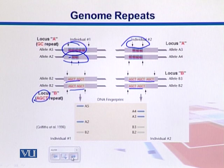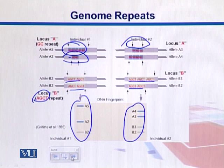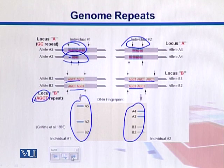These are the bands coming from individual number one, and these are the bands coming from individual number two. In this way, by obtaining those repeat regions and running them on gels, we can detect which DNA belongs to which organism.